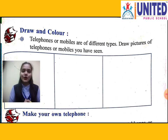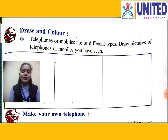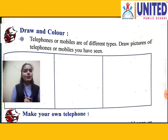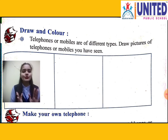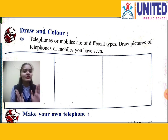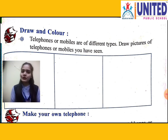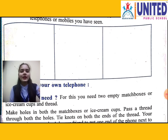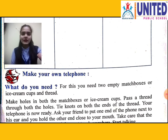On the next page there is a draw and color activity. Telephones or mobiles are of different types. Draw pictures of telephones or mobiles you have seen. Many spaces are given here for your drawings.